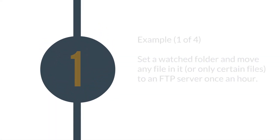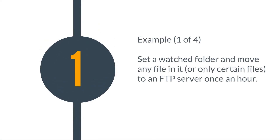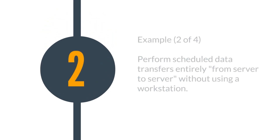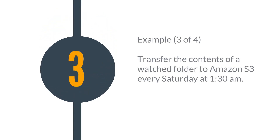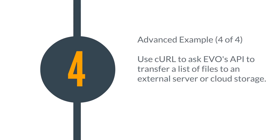Basic examples include setting a watch folder that moves any file in it — or only certain files — to an FTP system every hour, scheduled server-to-server transfers so that you don't have to use a workstation, and sending files in a watched folder to cloud storage once per week at a certain time. If you're a developer, an advanced example would be to use the API to transfer files on demand to an external server or cloud storage provider.